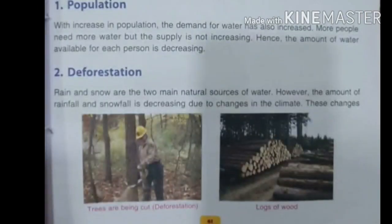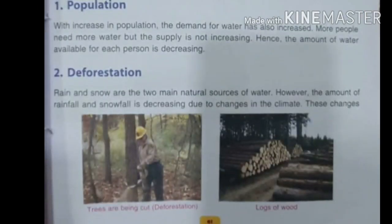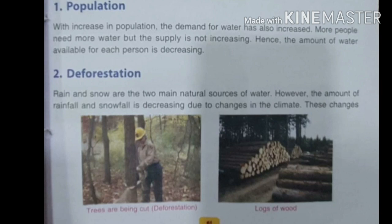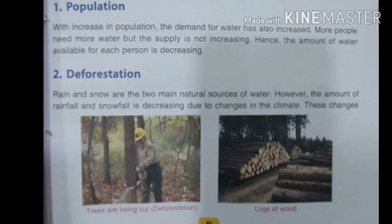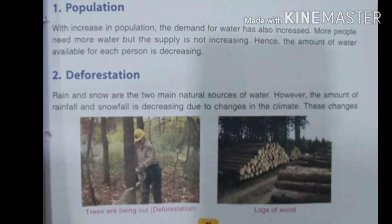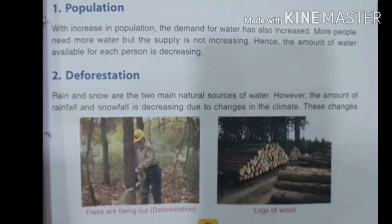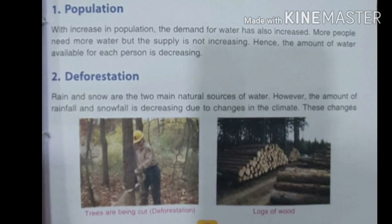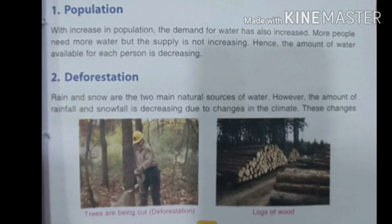Another factor of water shortage is deforestation. Cutting of trees on a large scale from forests is known as deforestation. As the population is increasing, we need more houses and factories, so we clear up forests. Rain and snow are the two main natural sources of water.